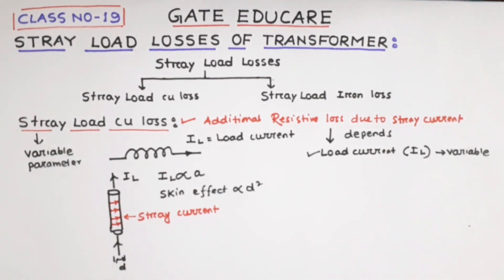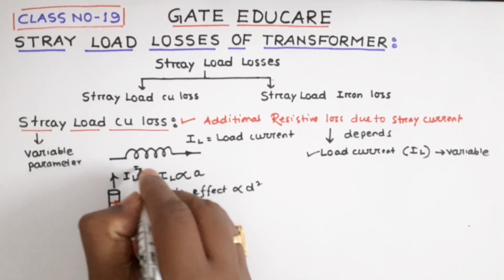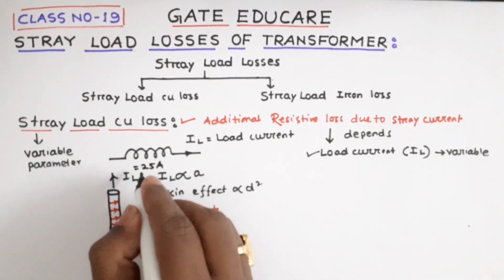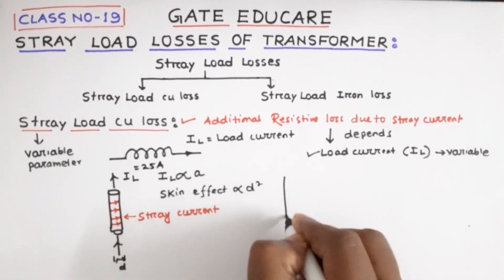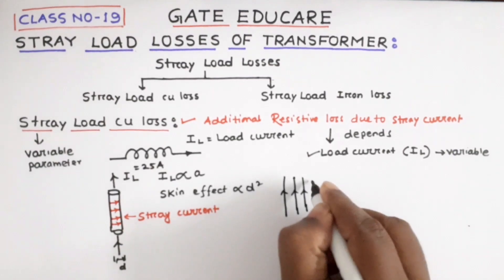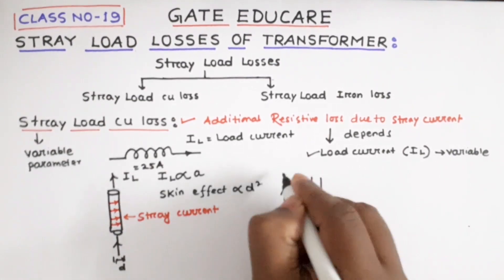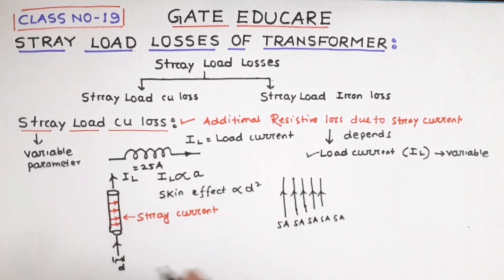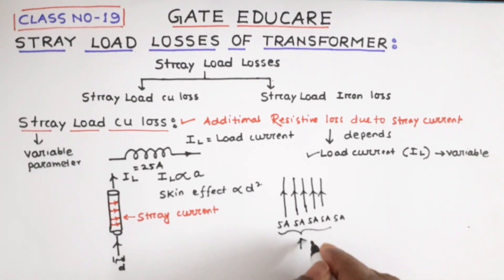Now, how to reduce the stray load copper loss? The stray load copper loss can be reduced by decreasing the solidness of the conductor. Suppose the load current is 25 amperes. Instead of using a single conductor rated 25 amperes, if we use a multi-strand wire of a smaller diameter — suppose 5 conductors of 5 amperes each — the total is still 25 amperes.